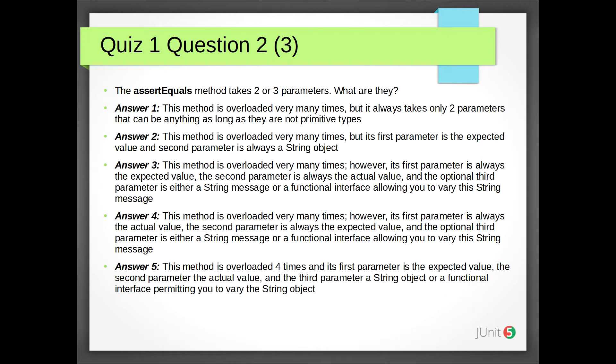Answer 5: This method is overloaded four times, and its first parameter is the expected value, the second parameter is the actual value, and the third parameter is a String object or a functional interface permitting you to vary the String object.